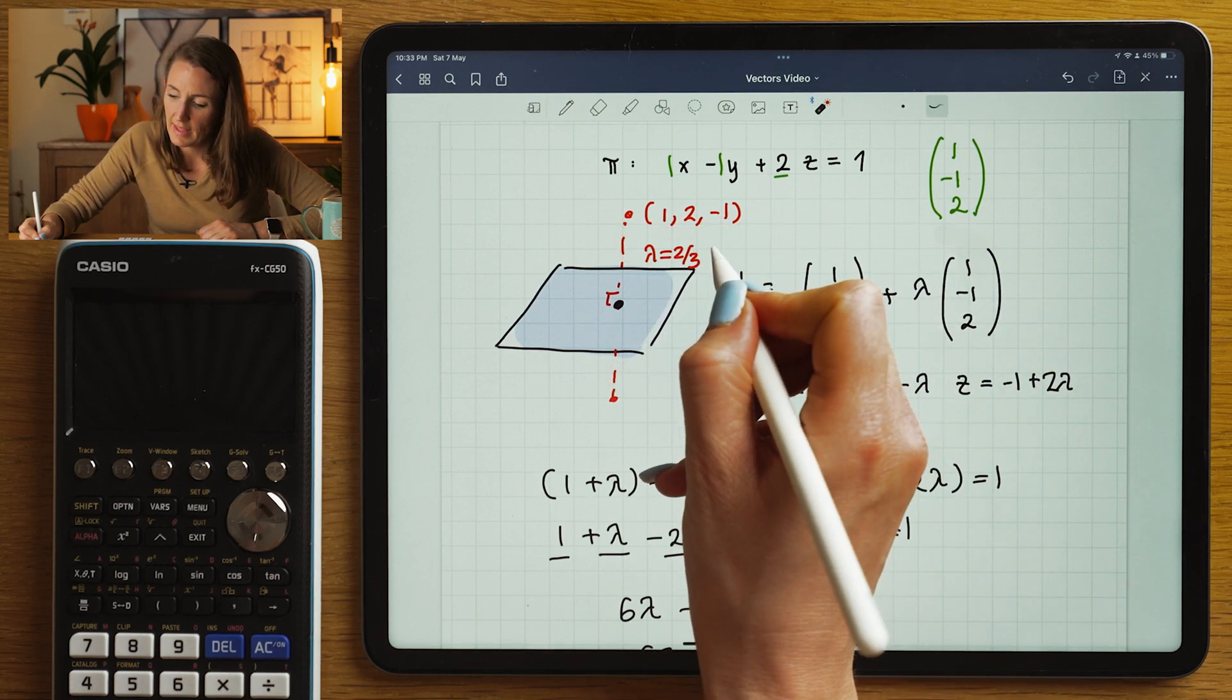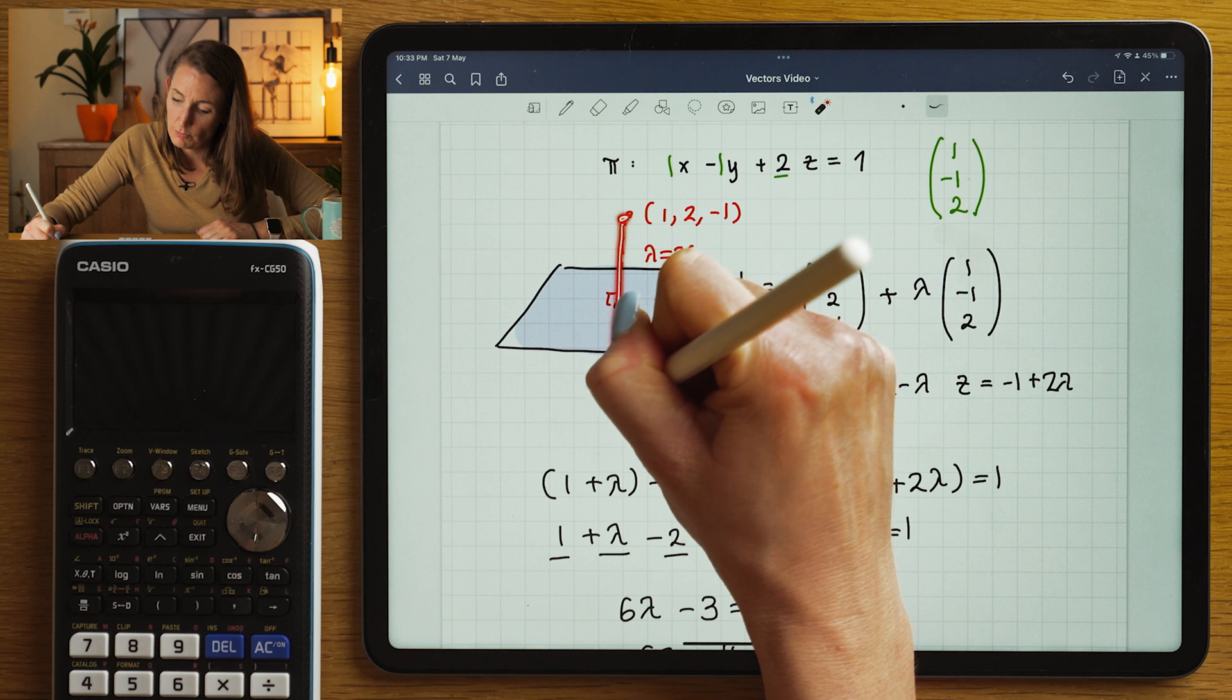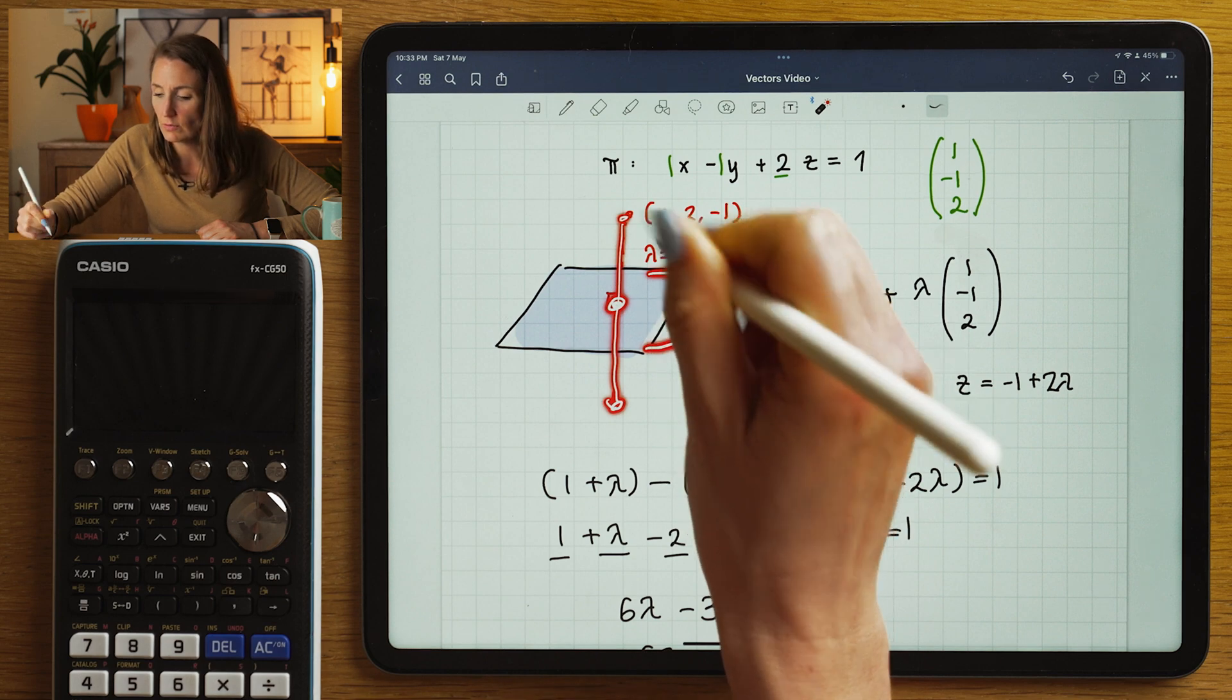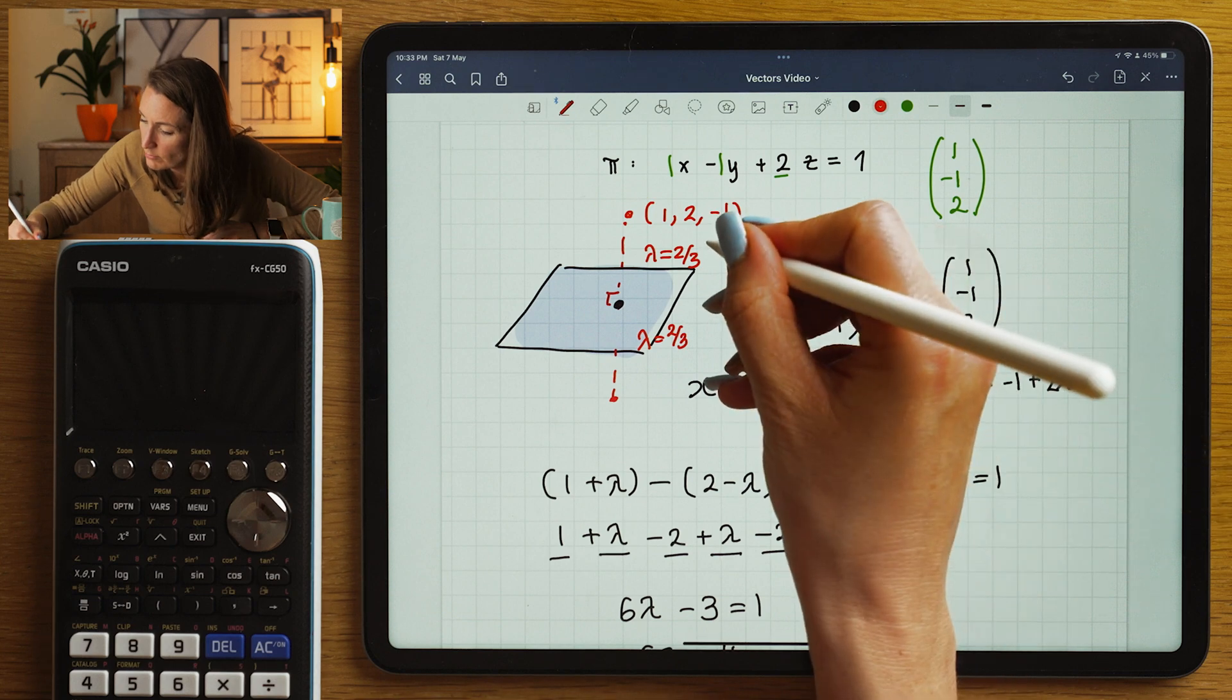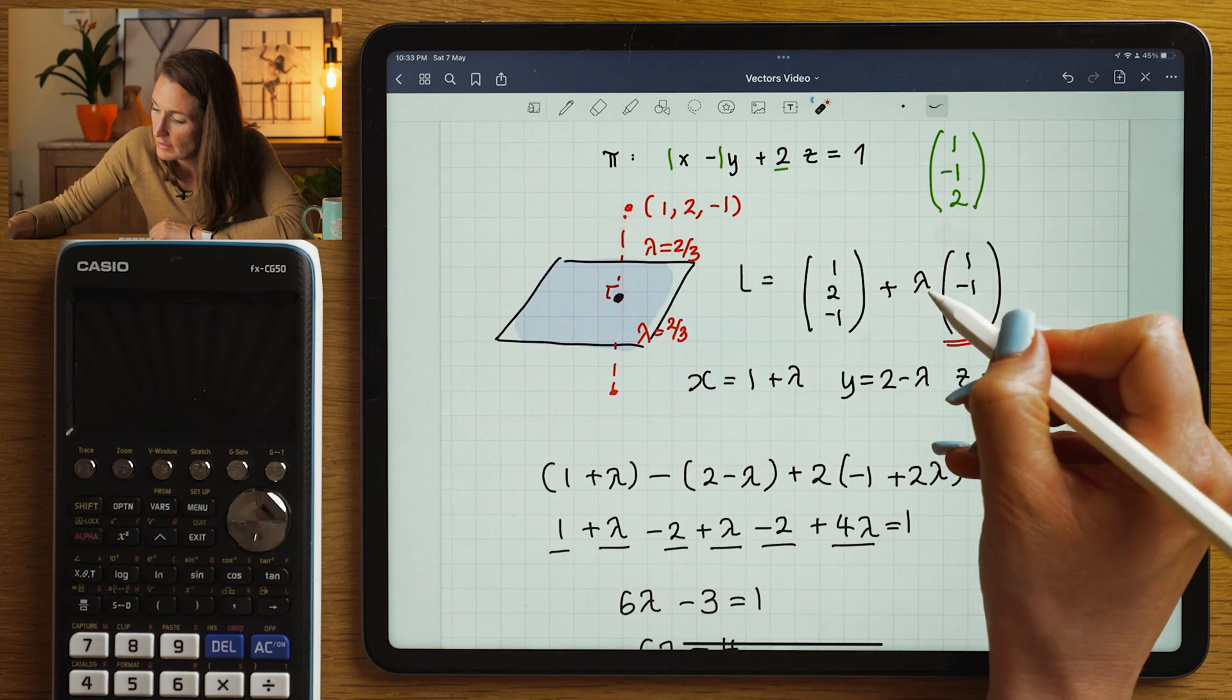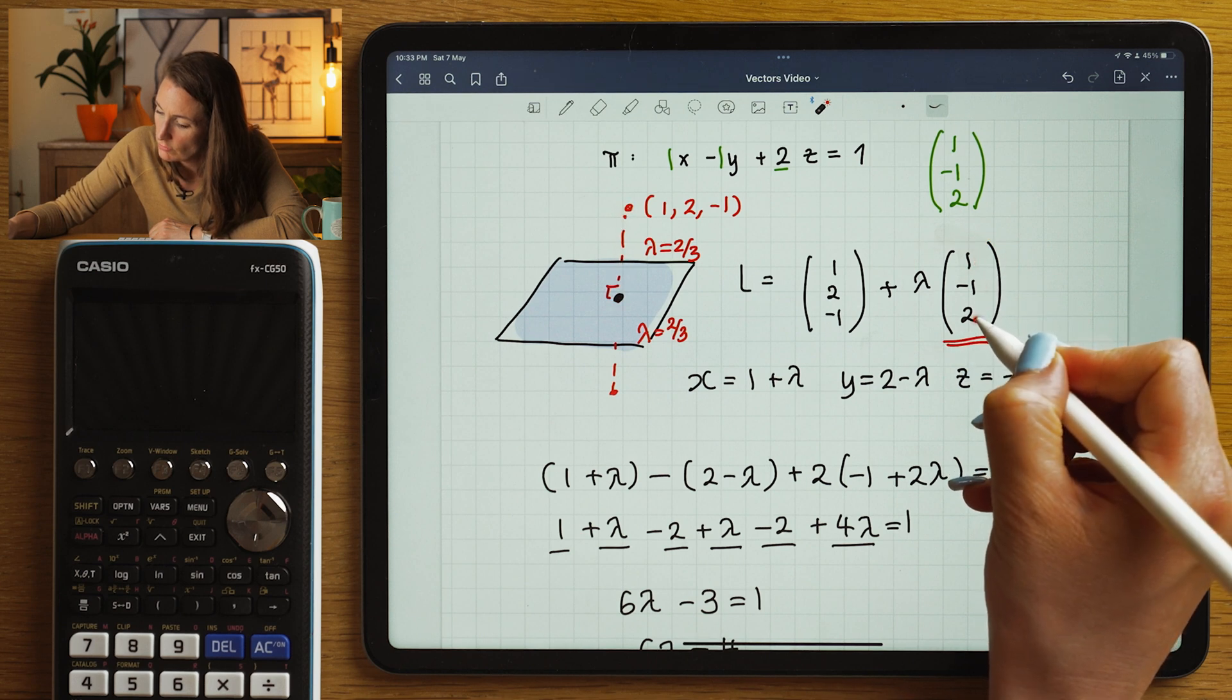What I'm going to do is I'm going to say if lambda is two thirds to get from here to here, to get from here to here would be double that, right? Because I would need two thirds to get here. And this is the reflection, so it's equal distance on the other side. So to get from here to here, I need another two thirds times by (1, -1, 2).